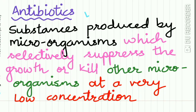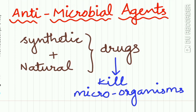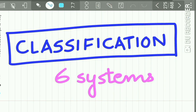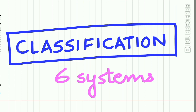Antibiotics are substances produced by microorganisms that selectively suppress the growth of or kill other microorganisms at very low concentrations. The antimicrobial agents, or AMA, include both synthetic as well as natural drugs that kill microorganisms — both synthetic and naturally derived drugs are together called antimicrobial agents.